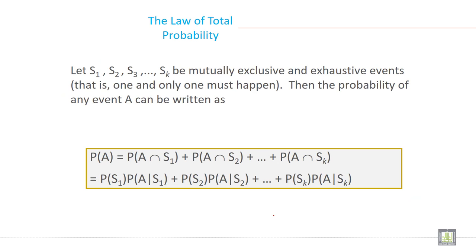Law of total probability. Let S1, S2, S3, and SK be mutually exclusive and exhaustive events. That is, one and only one must happen. Then the probability of any event A can be written as probability of A equals A intersection S1 plus A intersection S2 plus A intersection SK.